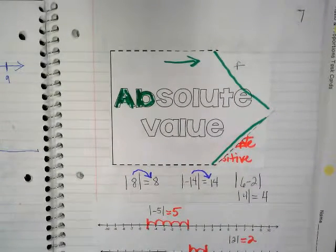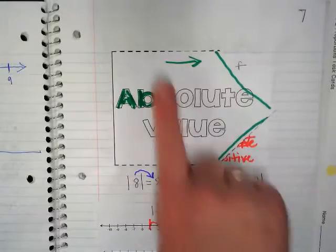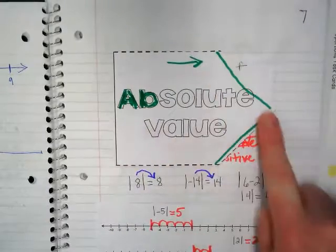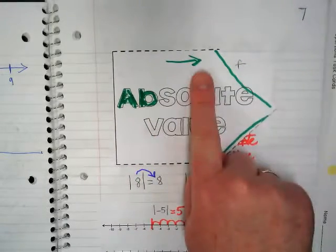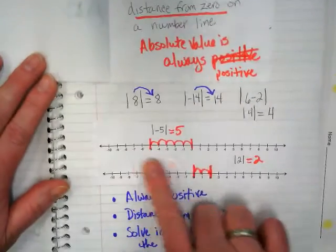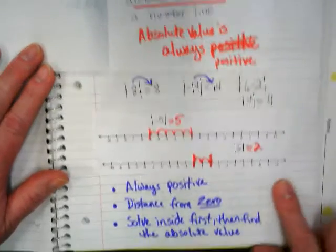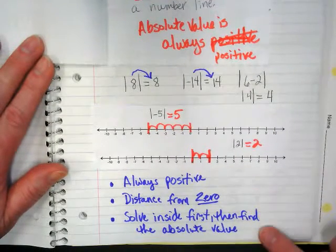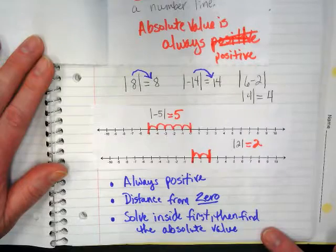Page seven we had our first thing that we glued in: absolute value. We showed that this is an arrow that's pointing right because absolute value always goes to the right. You took some notes inside. We also glued in a number line and have these three bullets to talk about what absolute value is true.